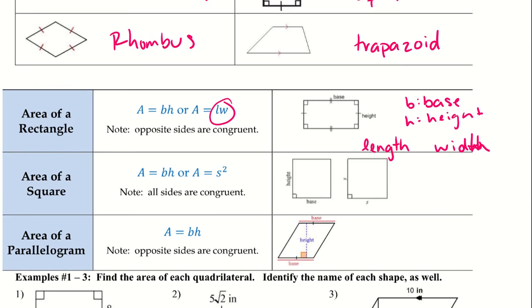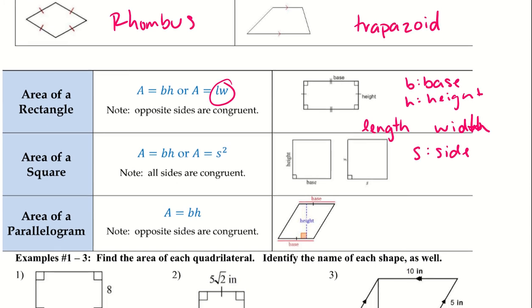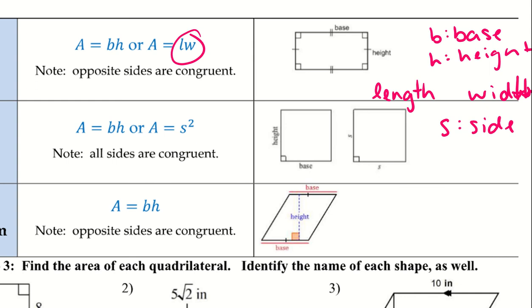For a square, we can use base times height (B times H), or use S squared, where S stands for side. Since all sides are the same length, it's S times S, written as S². For a parallelogram, area is also base times height. The height goes from the very top to the very bottom creating a 90-degree angle, and opposite sides are congruent, so both bases are the same.